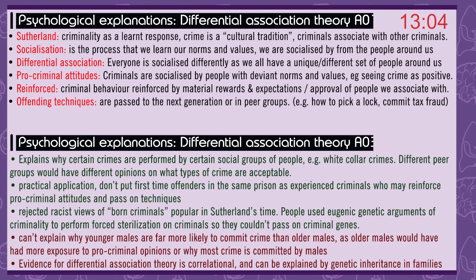Different peer groups have different opinions on what types of crime are acceptable. There are practical applications: don't put first-time offenders in the same prison as experienced criminals, as they might reinforce pro-criminal attitudes and pass on techniques. This theory was a rejection of racist views of born criminals popular in Sutherland's time — people used eugenic genetic arguments to justify forced sterilisation of criminals. But the theory can't explain why younger males are far more likely to commit crime than older males, who will have had far more exposure to pro-criminal attitudes, or why most crime is committed by males. Evidence for differential association theory is always going to be correlational, and can be explained just as well by genetic inheritance in families.